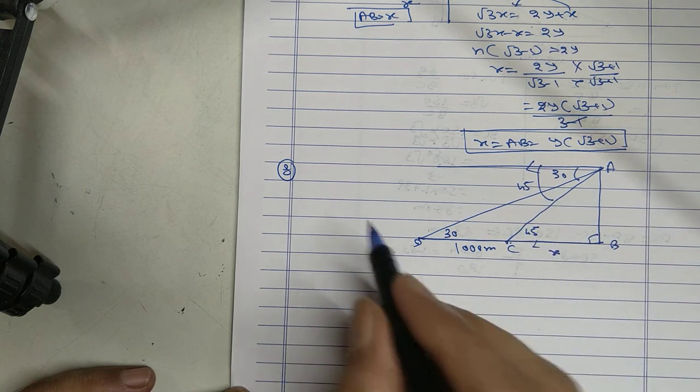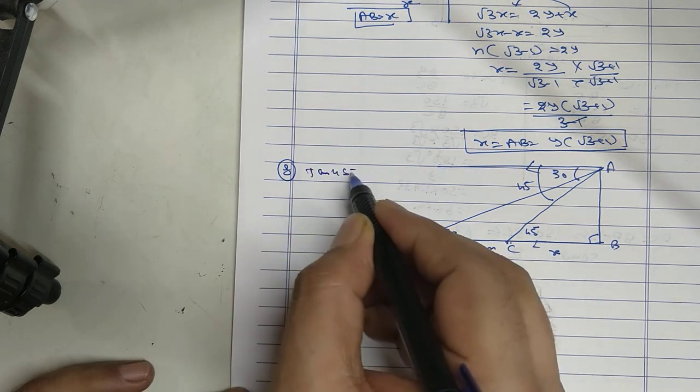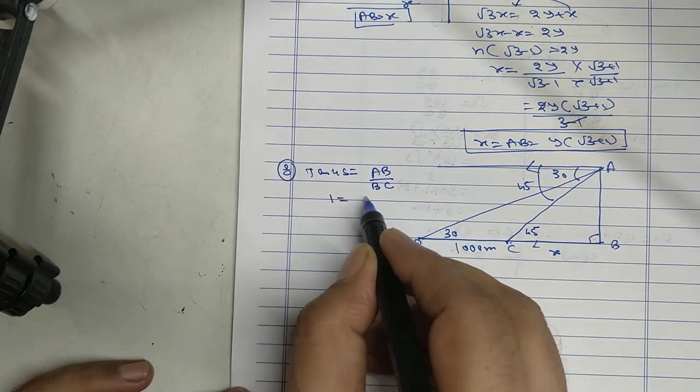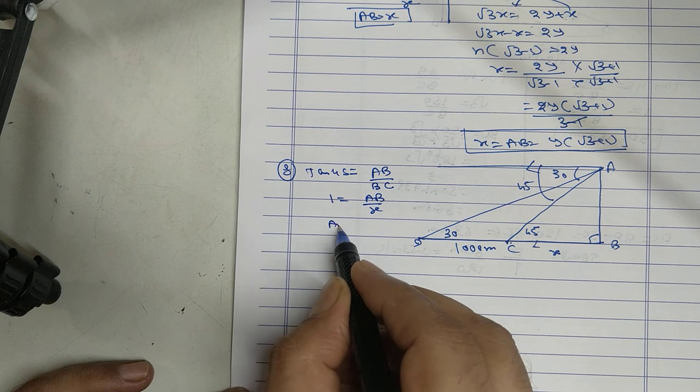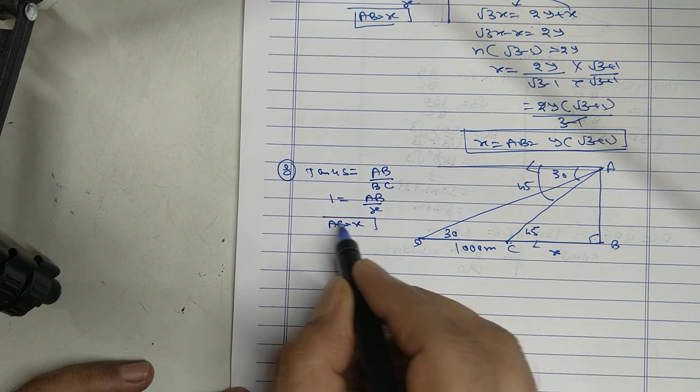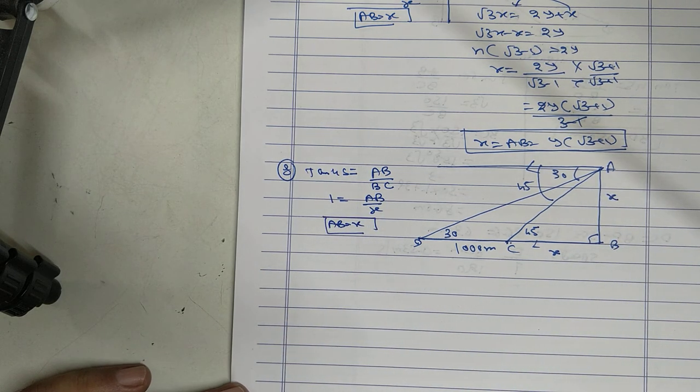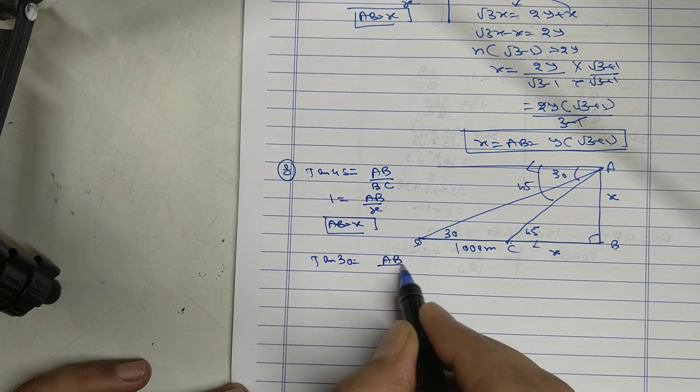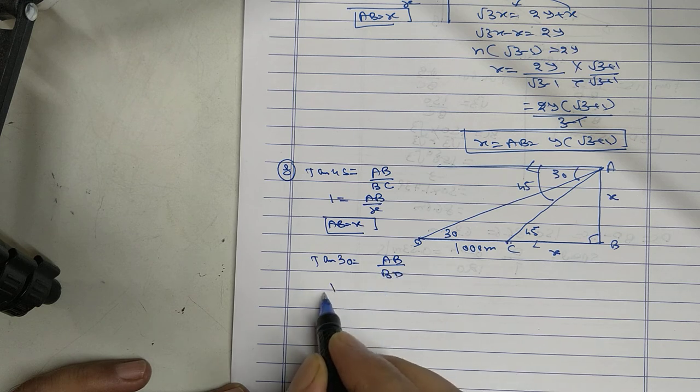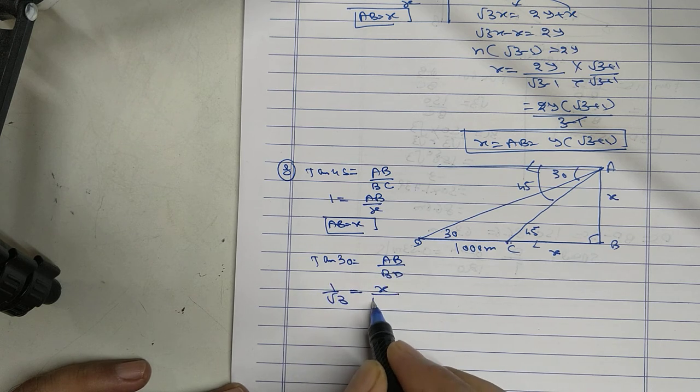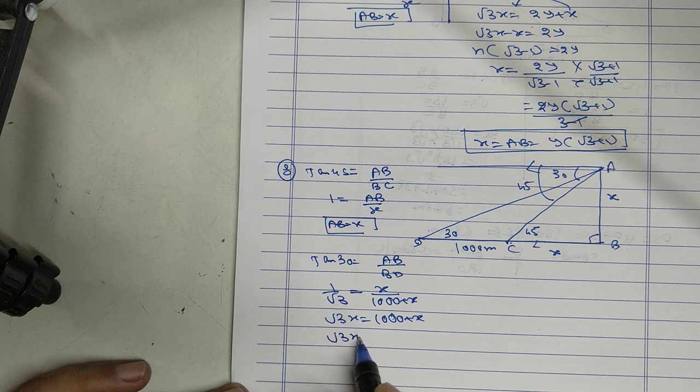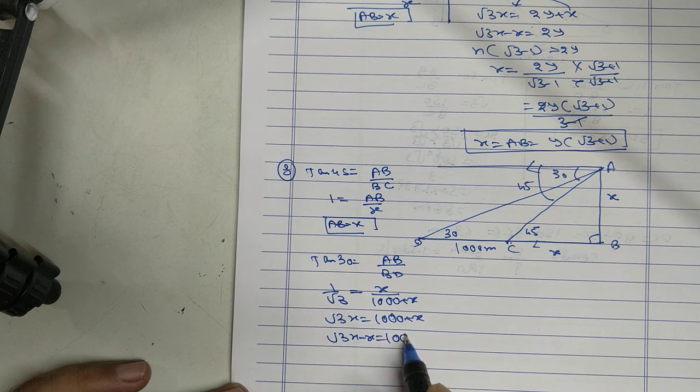Let BC is X. First use tan 45: AB upon BC, 1 equals AB upon X, AB equal to X. Tan 30, AB upon BD, X upon... So root 3X equals, root 3X minus X equals 1000.